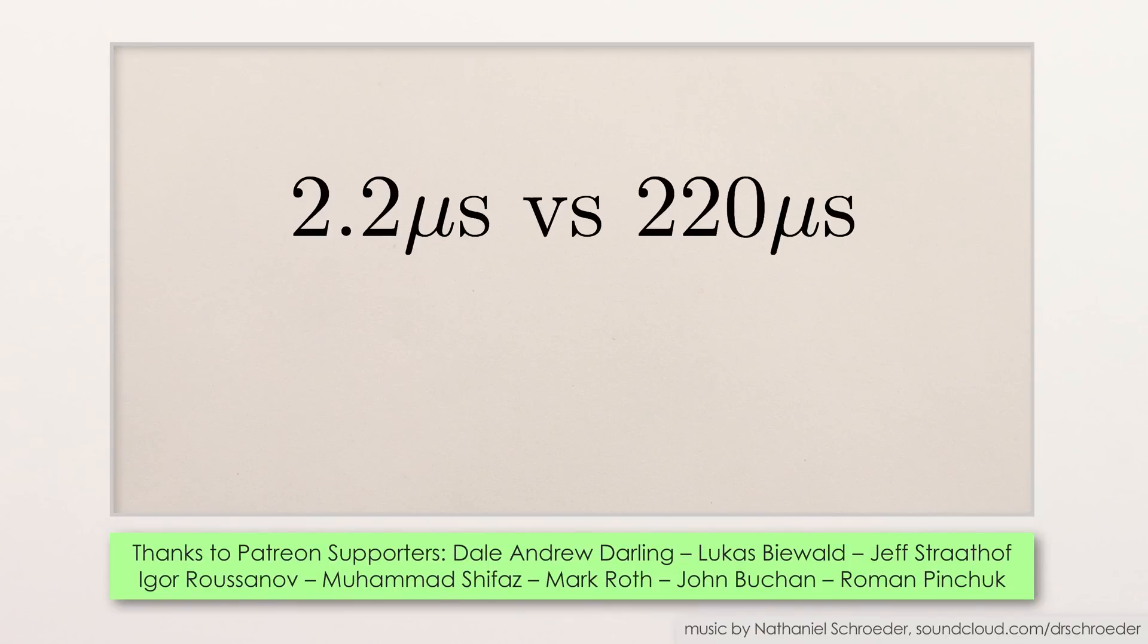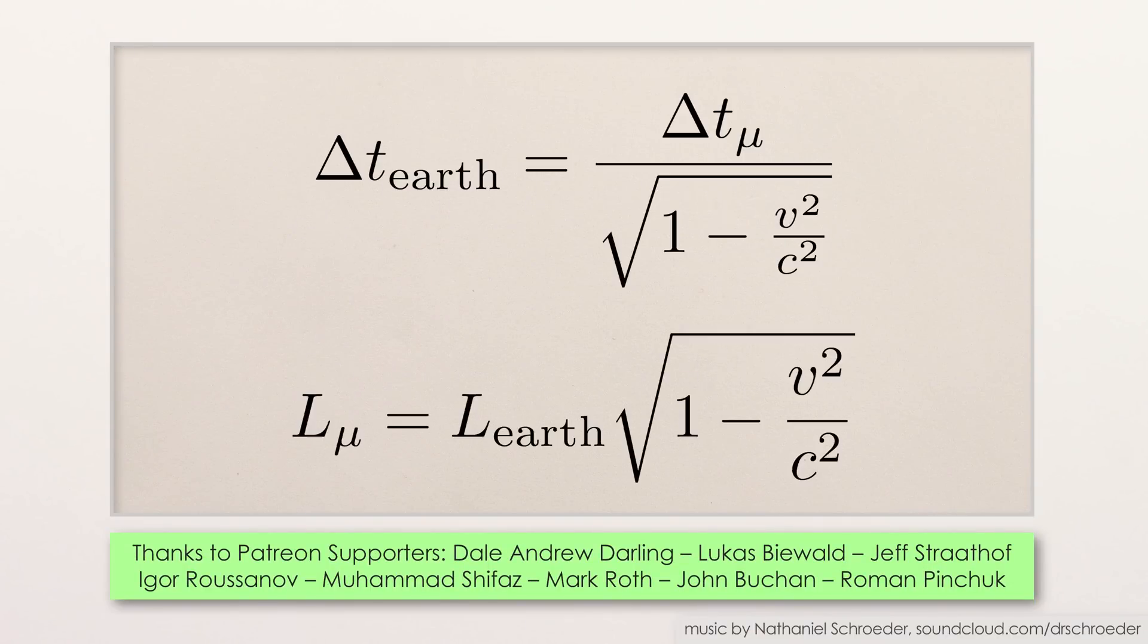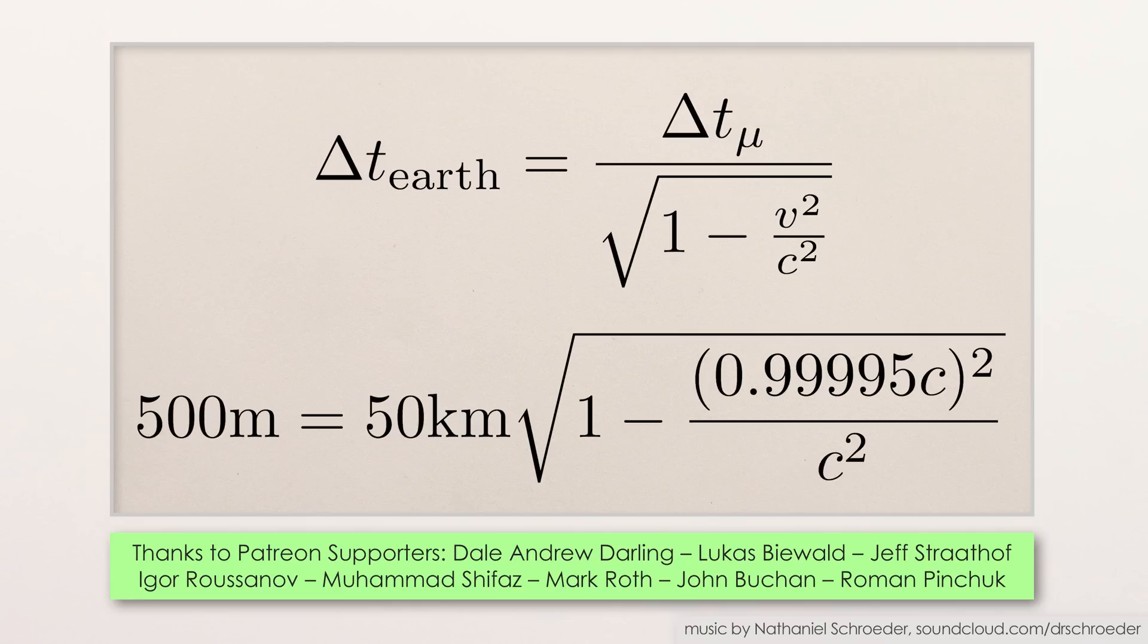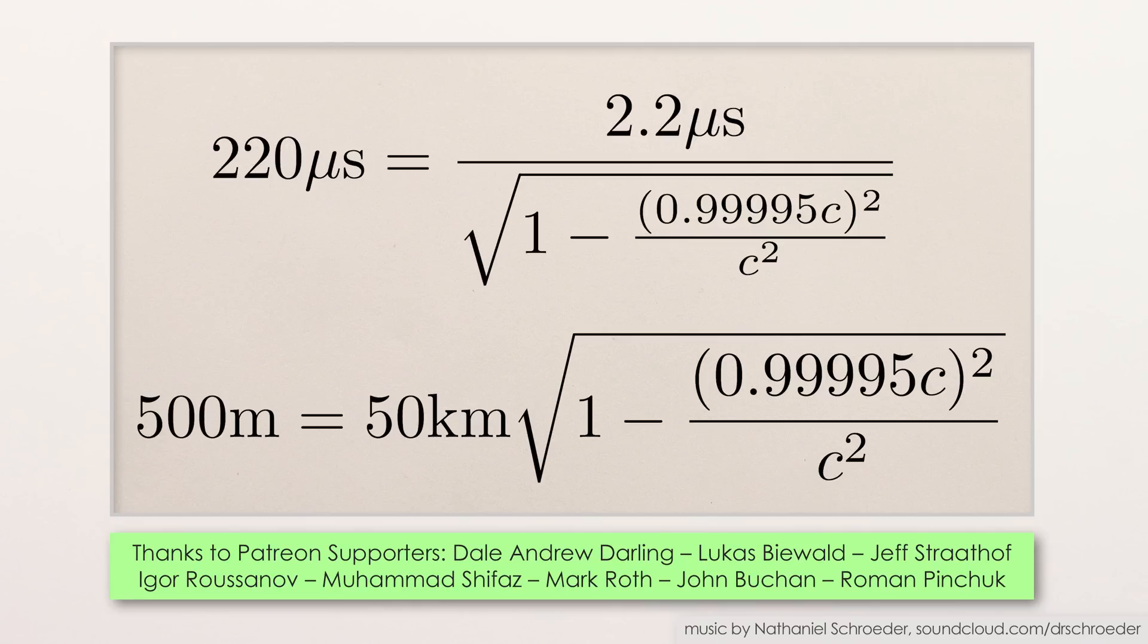The specific time dilation and length contraction factors I talked about can be calculated using the time dilation and length contraction formulas. Once you know how to use them, you can plug in any speed you want and see how much distances and time intervals will be distorted.